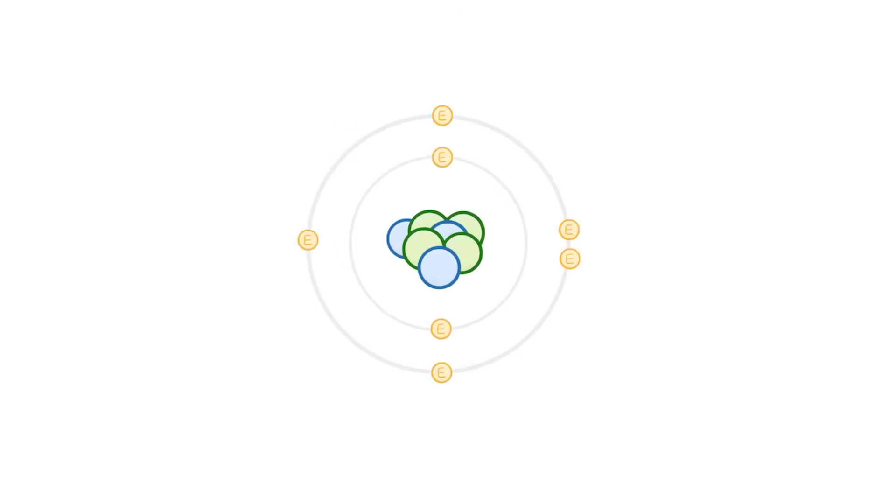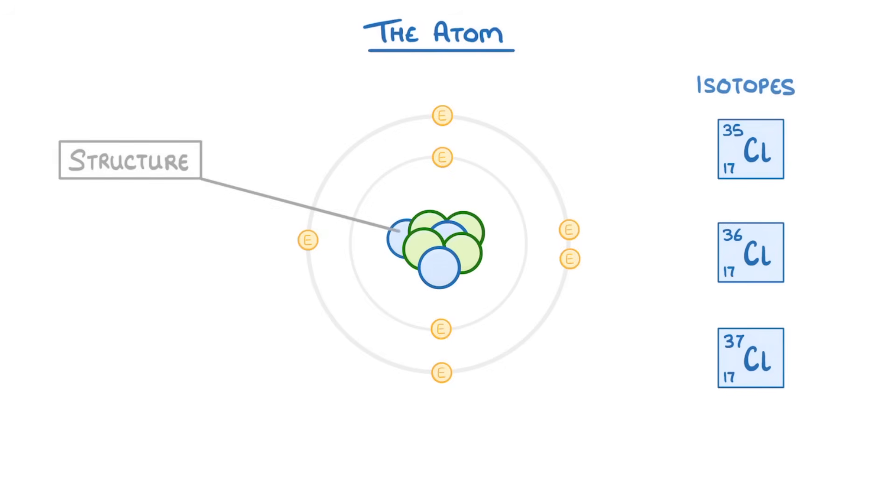In today's video, we're going to do a quick review of everything that you need to know about the atom from chemistry, like its structure and what isotopes are. We'll also look at how electrons can move between different energy levels.